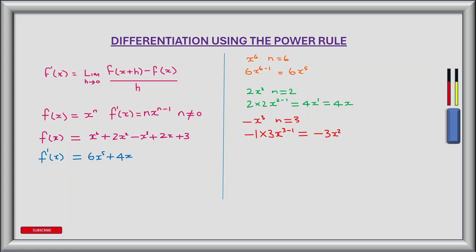Now let's take the third term, minus x cubed, where n is 3. Let's think of this term as having a coefficient of minus 1. So applying the power rule we multiply this coefficient by n, which is 3, then multiply that by x to the power of n minus 1. So n minus 1 is 3 minus 1, which gives us minus 3x squared. We can now add this third term, so f prime of x is now 6x to the power of 5 plus 4x minus 3x squared.